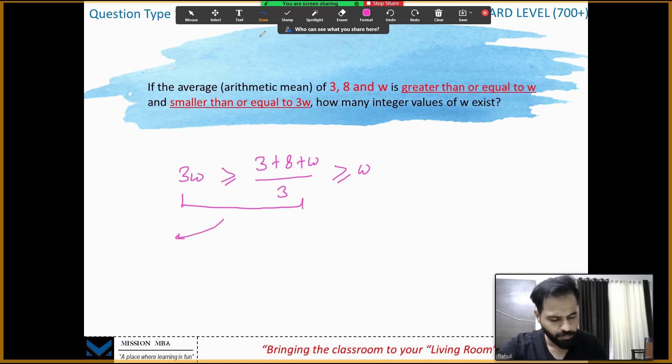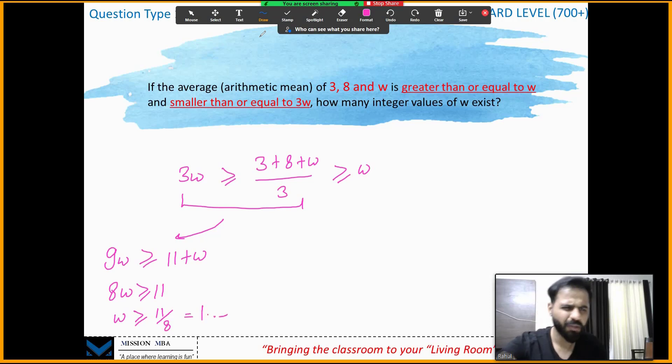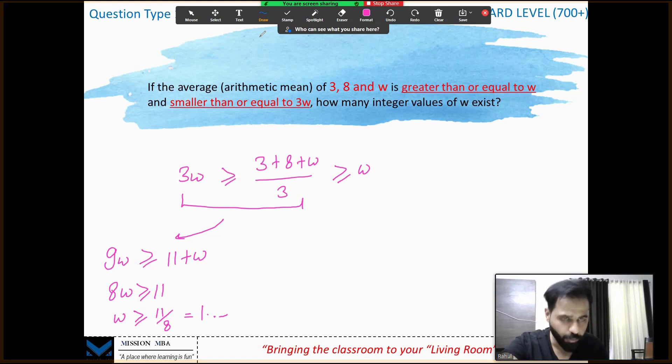3 goes there, 9w greater than 11 plus w, 8w greater than 11, w greater than 11 by 8, or somewhere 1 point something. I'm not interested in exact value. Ultimately you're looking for integral values. The first value w will be able to take is nothing but 2, which is greater than 1 point something.